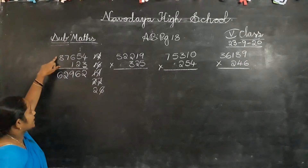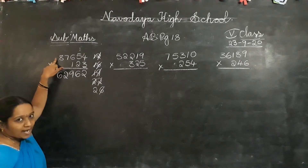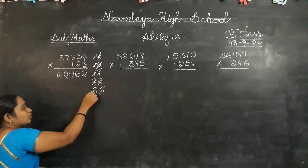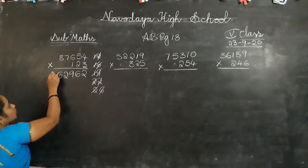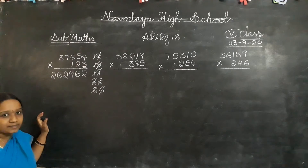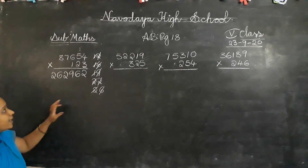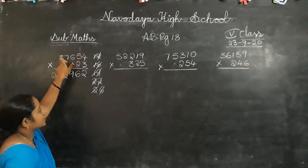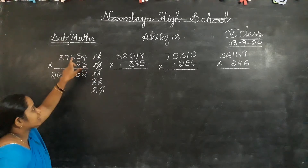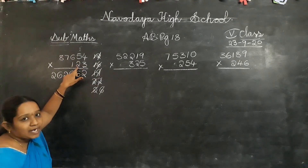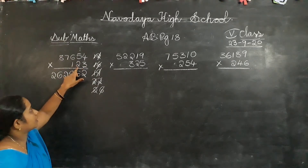Write the 1's digit in the answer place. Is there any number to add next? No. So write the 2 also in the answer place. The 1's place digit multiplication is over. Next: 10's place digit multiplication.